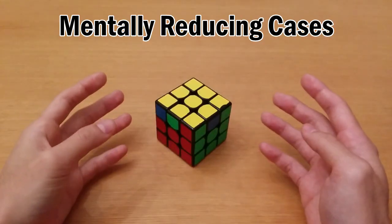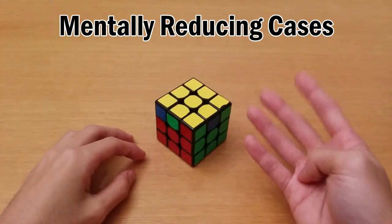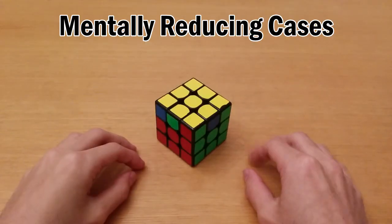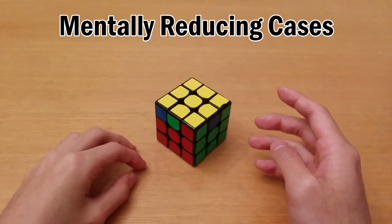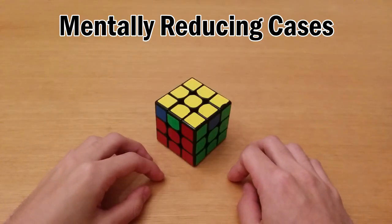So the reason why you can so easily reduce the number of cases for diagonal swap PLLs is because there are only four cases and so therefore there would be more distinct things about them. But for adjacent swap PLLs it is a little bit harder and in order to reduce it that is actually very advanced and I will talk about that in a different video.